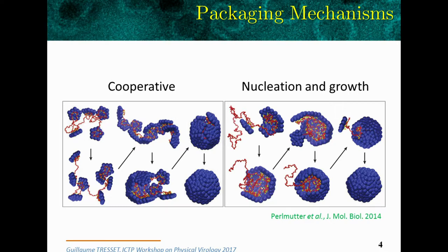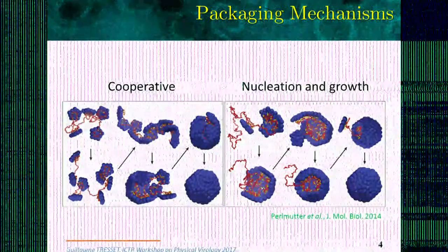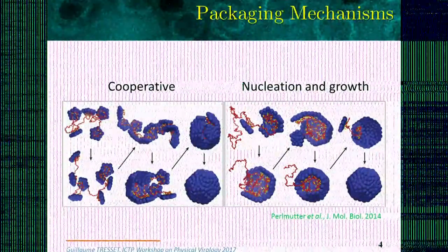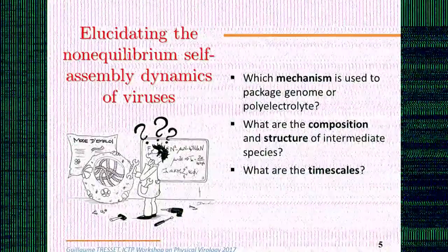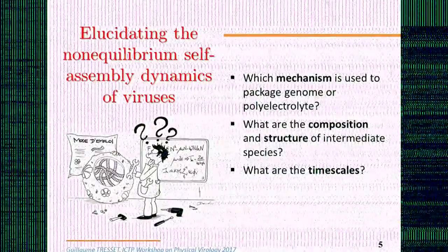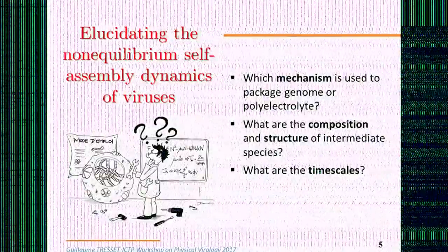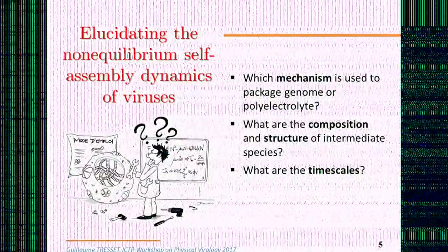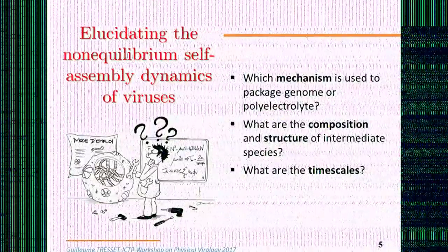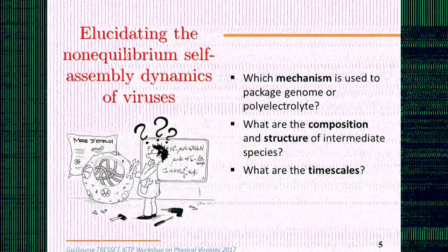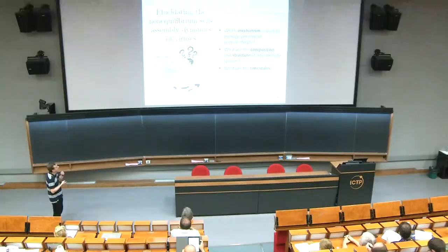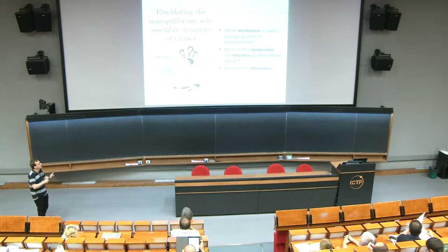My goal is precisely to study these kinetic pathways and to find whether we can identify for the CCMV any of these pathways by controlling precisely — with the pH and the salinity — the interaction between the two components. More precisely, I tried to identify the mechanism and the composition and the structure of the intermediates formed along the kinetic pathway — how many subunits are bound to the genome as a function of time, and the typical timescales over which the process takes place.